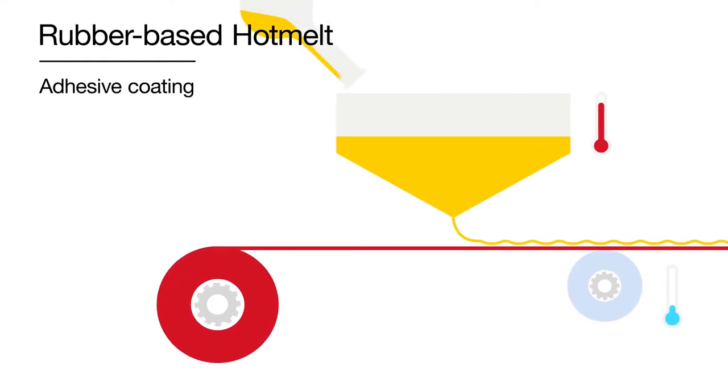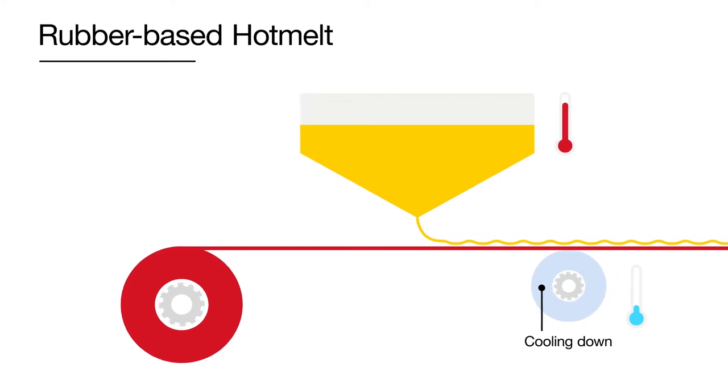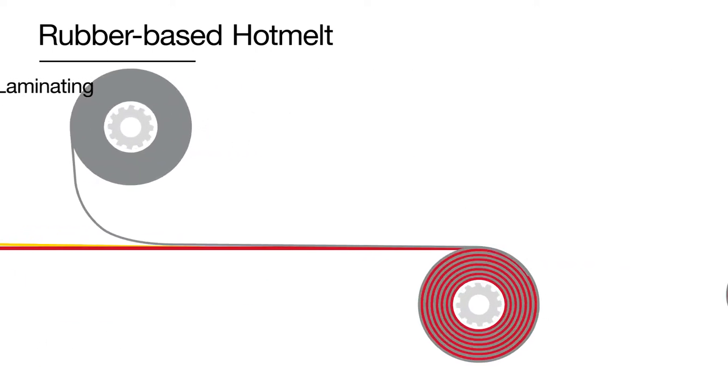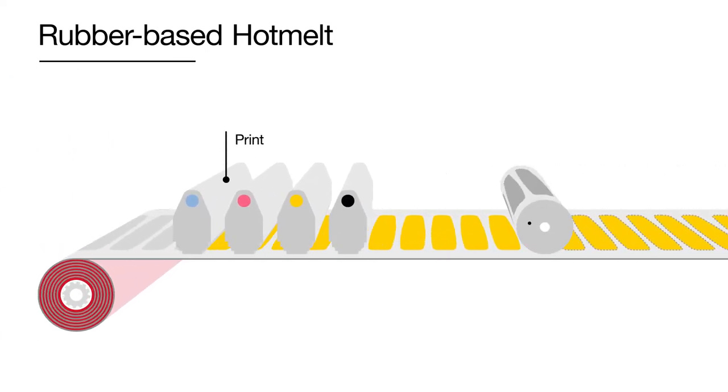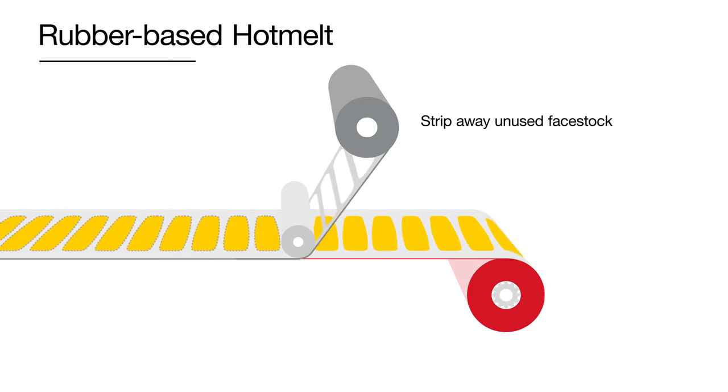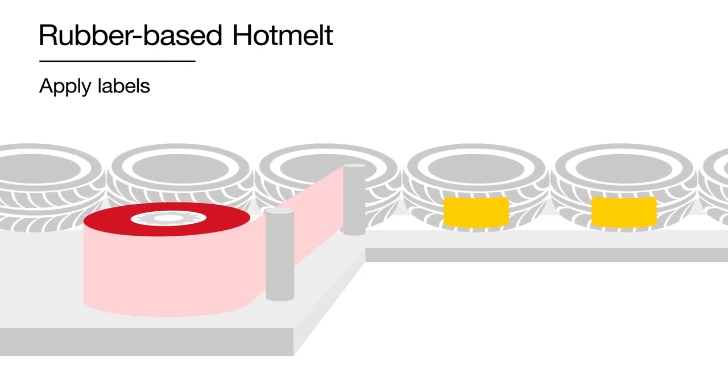When making labelling materials, we apply rubber-based hot melt adhesive onto a liner. After it has cooled down, we lay the label face material on top. Label converters can then print and die cut the finished roll and strip away unused face stock material. The labels are now ready for the end user to apply onto packaging.